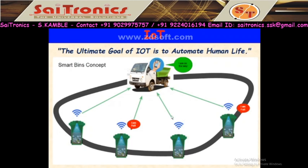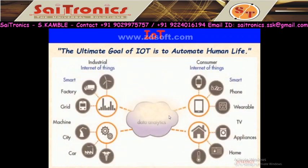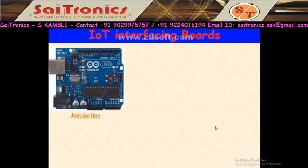You can take different examples. Consumer Internet of Things includes smartphones, wearables, TV appliances, home automation, etc. Industrial Internet of Things includes smart factory, smart grid, smart machine, smart city, smart car, etc. All these consumer IoT and industrial IoT are connected to each other for data analysis. This is a brief overview of IoT.